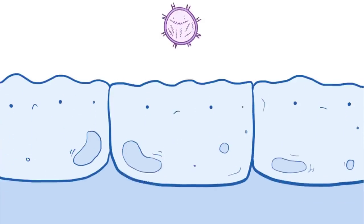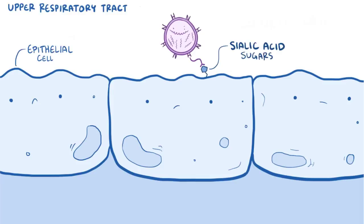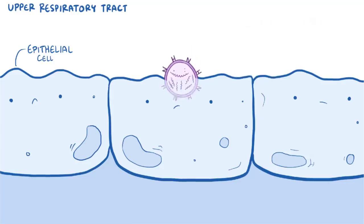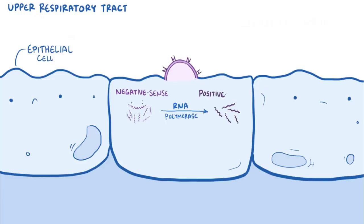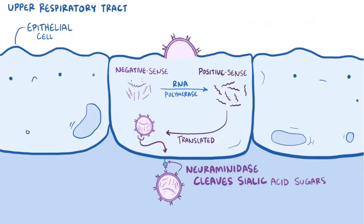When the flu virus enters the body, it uses hemagglutinin to bind to sialic acid sugars on the surface of epithelial cells in the upper respiratory tract. Once bound, the cell swallows up the virus in a process called endocytosis. That viral RNA is negative sense, which means that each piece first has to be transcribed by RNA polymerase into positive sense mRNA strands before it can be translated into proteins and assembled into new viruses. These viruses then leave the cell by simply budding out from it by using the neuraminidase, which cleaves the sialic acid sugars in the membrane, releasing the newly created viruses from the cell.